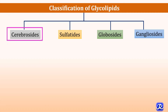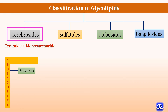The cerebroside is made up of ceramide plus monosaccharide. Ceramide is nothing but when fatty acid is attached to sphingosine, it is called as ceramide. When this ceramide is attached to a monosaccharide — that is glucose or galactose — it becomes a cerebroside.